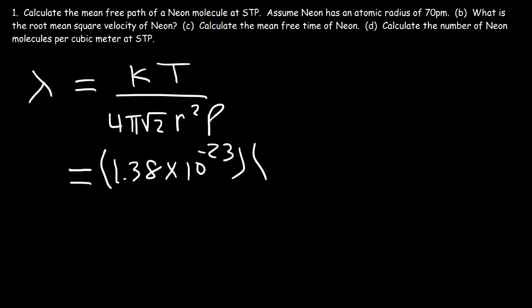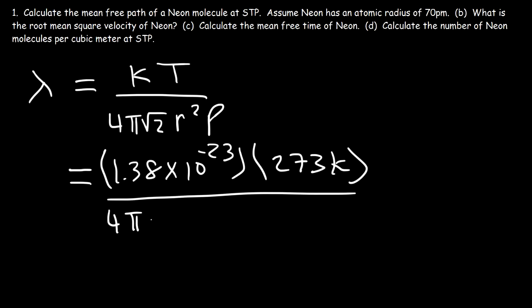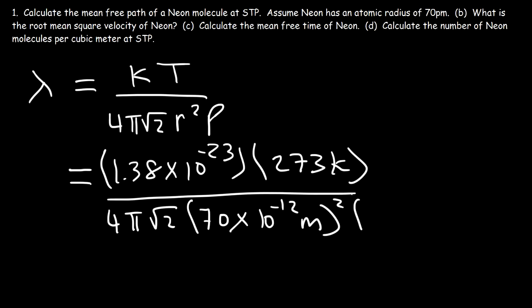We want to calculate the mean free path at STP, standard temperature and pressure. At STP, the temperature is 0 Celsius, which is the same as 273 Kelvin. Then we divide by 4 pi times the square root of 2. The atomic radius is 70 picometers — 1 picometer is 1 times 10 to the negative 12 meters, so this is 70 times 10 to the negative 12 meters, and don't forget to square it. The pressure at STP is 1 atm; however, the units must be in pascals, which is newtons per square meter, so 1 atm is 101,300 pascals.